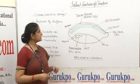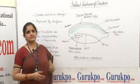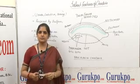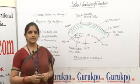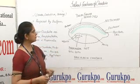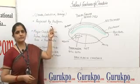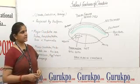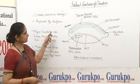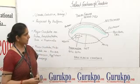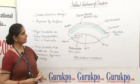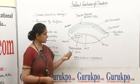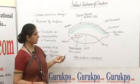Chordata is the last major phylum of the animal kingdom and it is the largest deuterostome phylum. This word Chordata was first proposed by Balfour, and according to him, the chordate animals have three main features inside their body.